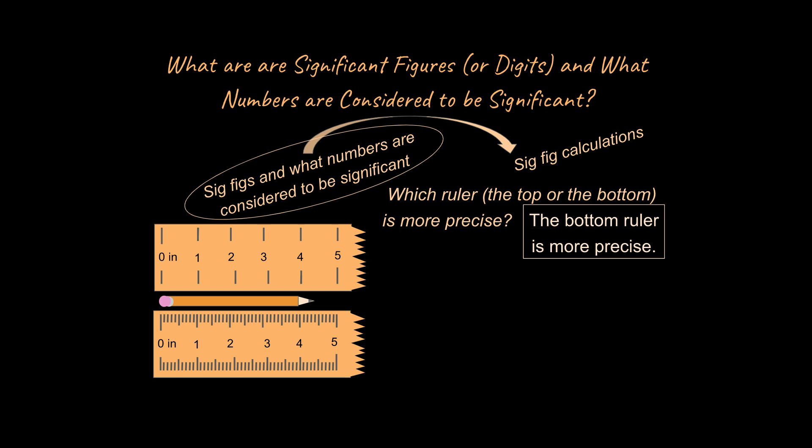We mean we're talking about how precise the measuring device is, and some devices are more precise than others. In other words, the bottom ruler is more precise than the top ruler here.